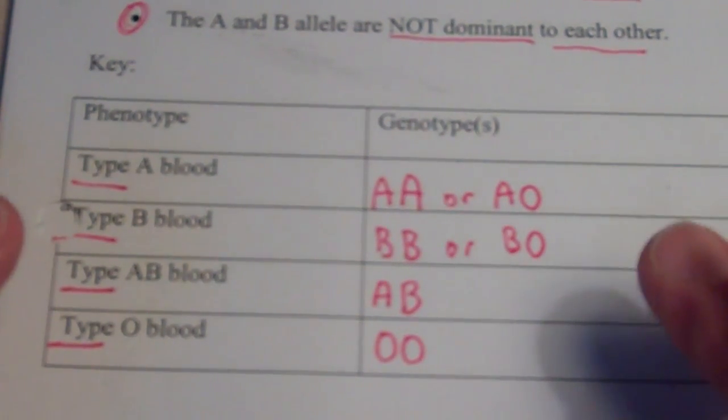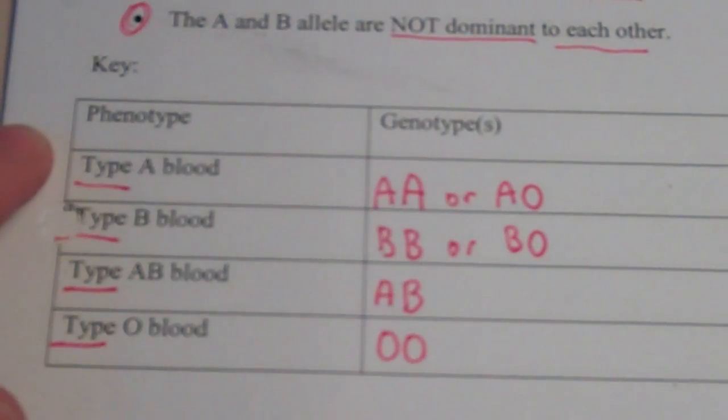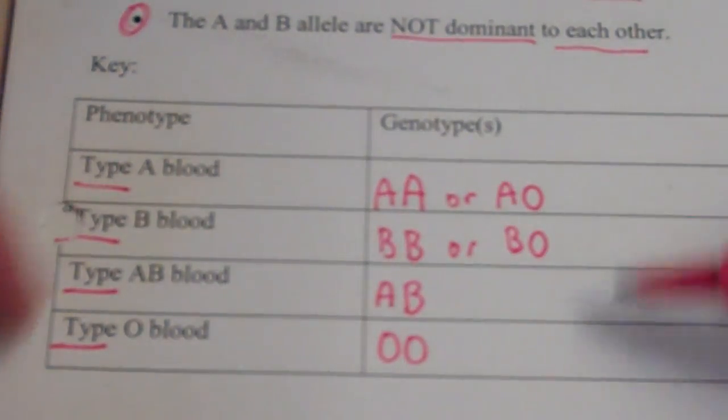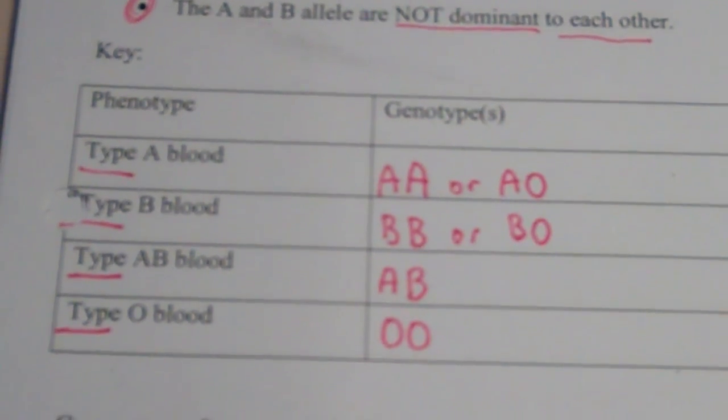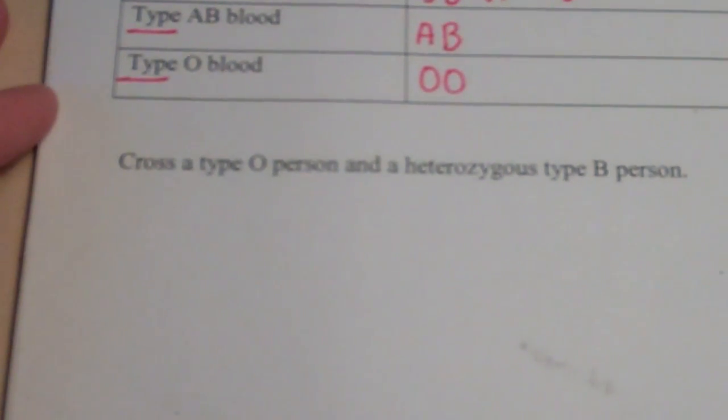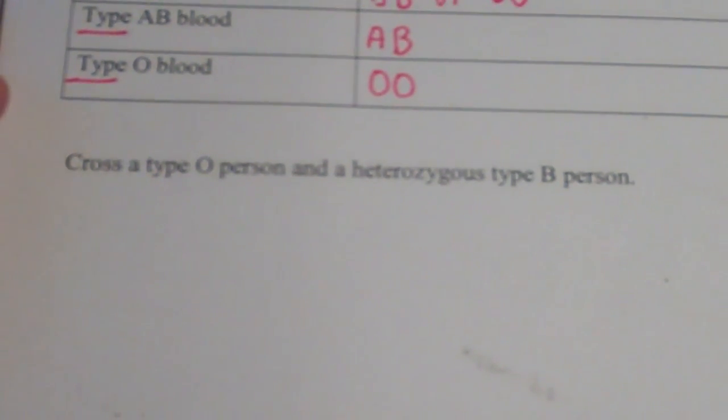Alright, memorize this key. Be able to write the whole thing, starting with your heading. Make a simple T chart and then fill everything in. Alright, I'm going to get you started on this. Cross a type O person and a heterozygous type B person. It doesn't tell you who mom and dad is. It doesn't matter.